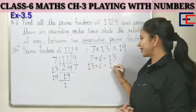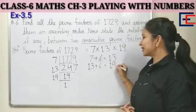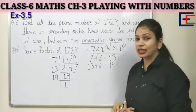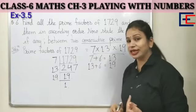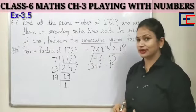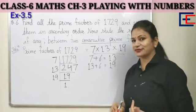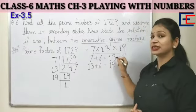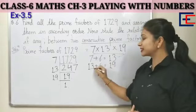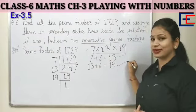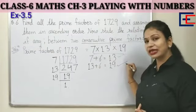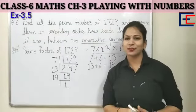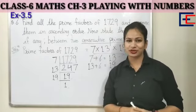What is the relation between the numbers? Each factor increases by 6: 7 plus 6 gives 13, and 13 plus 6 gives 19. This is the relation between the consecutive prime factors. Let's proceed to the next topic.